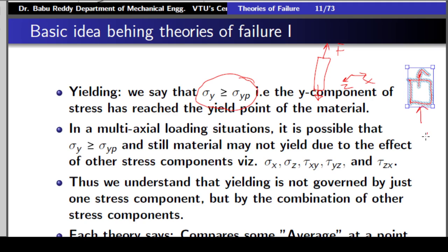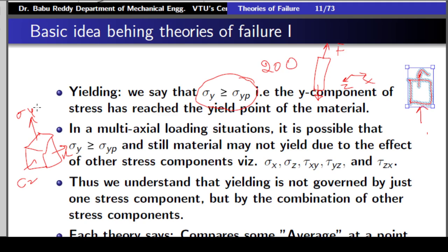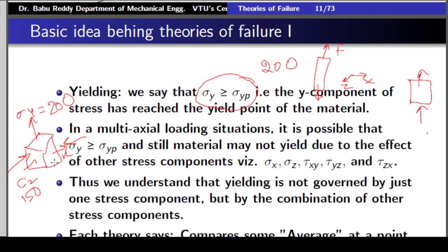Now the question is: can the same yielding be replicated if there are other components of forces? Let's take a three-dimensional specimen and apply all the stress components — sigma x, sigma y, and sigma z. The material is the same, and let's say in the earlier case we got a yield point of 200 MPa. Now we make sigma y equal to 200 MPa, but make the other stresses different — say compressive stresses of 150 each. Can we now say the material has yielded?